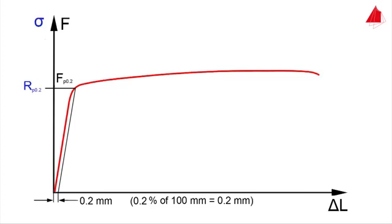The 0.2 percent proof strength Rp0.2 is equal to Fp0.2 divided by the original cross-sectional area S0. Tensile strength, percentage elongation after fracture, and percentage reduction of area are calculated in the same way as in the first test.